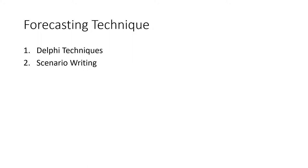Another technique is scenario writing. The forecaster generates different outcomes based on different starting criteria, and the decision maker then decides on the most likely outcome from the numerous scenarios. The next one is the subjective approach, which allows forecasters to predict outcomes based on their subjective thoughts and feelings. This method uses brainstorming sessions to generate ideas and solve problems, free from criticism and peer pressure, and often uses time constraints.